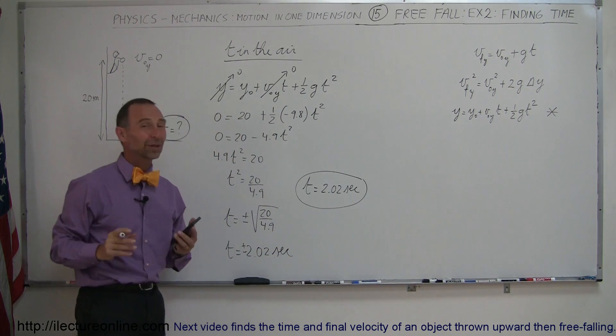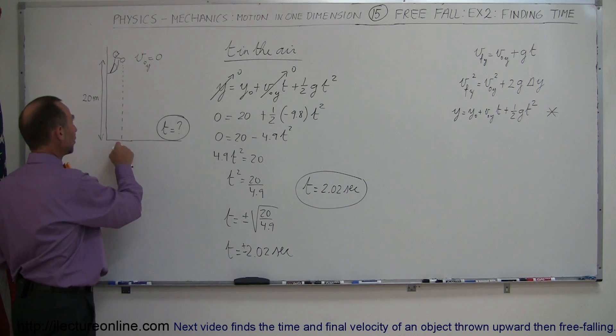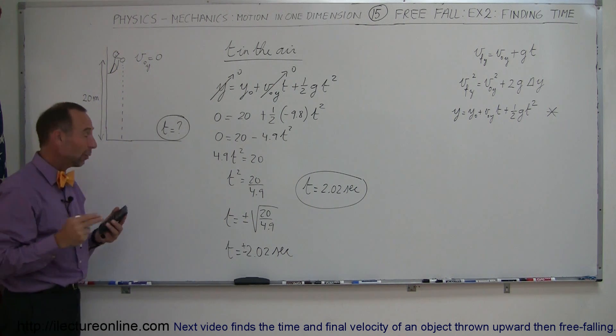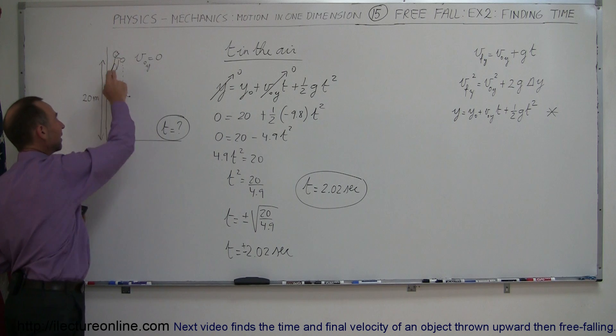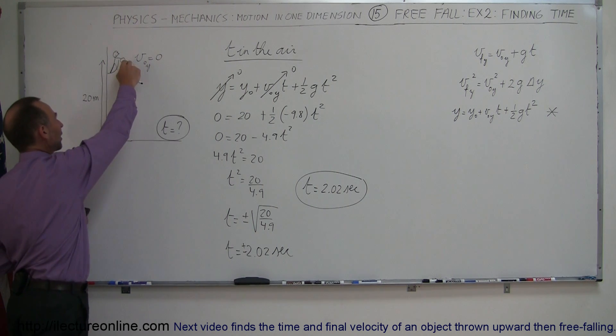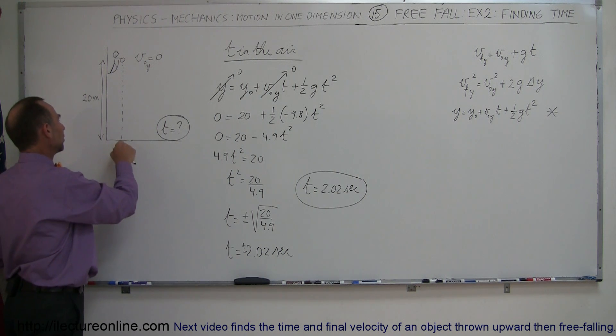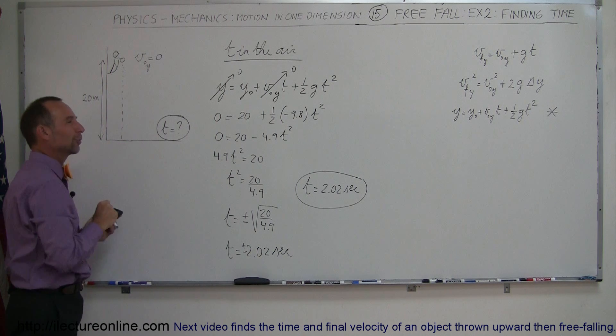So what does the negative answer mean? Well, it turns out the negative answer is, for example, let's say you throw an object up from this height all the way up to 20 meters and then it comes back down. Then, of course, it was on the ground before it gets to that height. And that would have been 2.02 seconds before you get to this position right there. So the negative answer actually means that the time that it takes to go from here to there is 2.02 seconds. So 2.02 seconds before it reaches that height, it would have been on the ground as well.